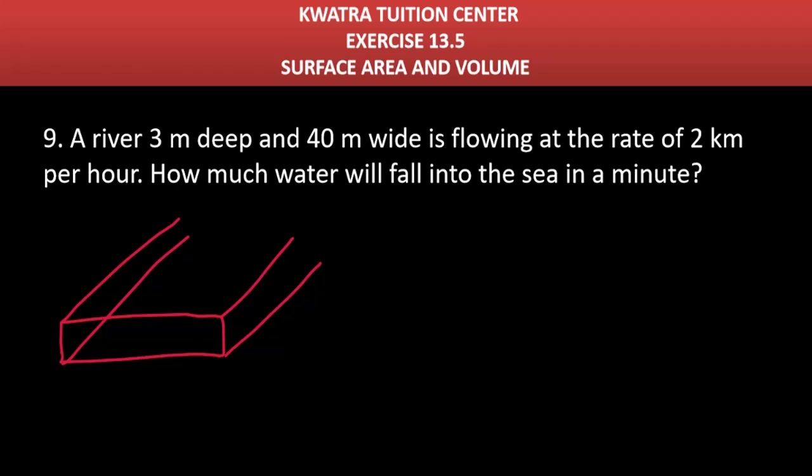Let's start with question number 9. It says a river 3 meters deep and 40 meters wide is flowing at the rate of 2 km per hour. How much water will fall into the sea in a minute?